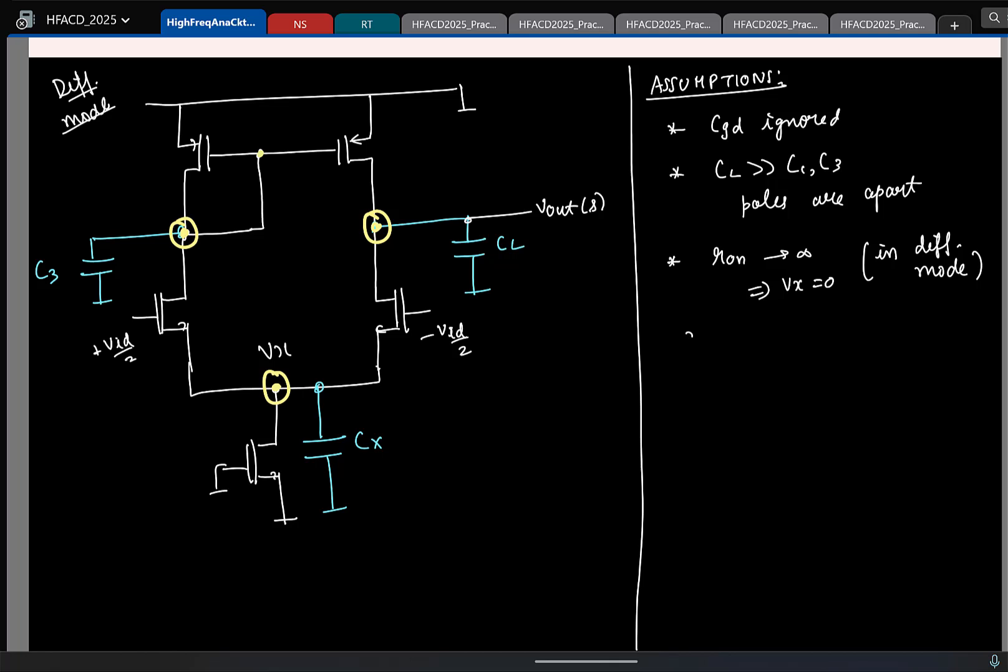So, we have two poles and one zero. Let us try to write the pole locations. Again, we have only two poles due to C3 and CL. What is the pole due to CL? What is the equivalent resistance? It is R0 of the N in parallel with R0 of the PMOS. So, we will simply write GDS of the NMOS plus GDS of the PMOS. Again, these are all approximate, should not be exact.